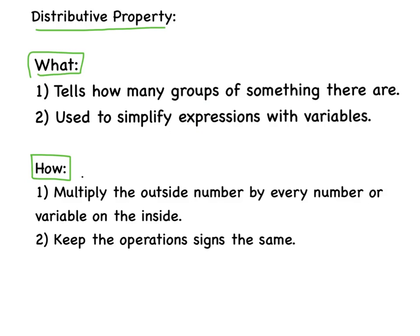How the distributive property works: you're going to multiply the outside number by every number or variable on the inside. And then your second step is to keep the operation signs the same. That's how it works.